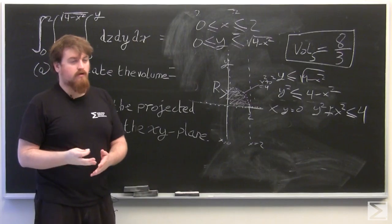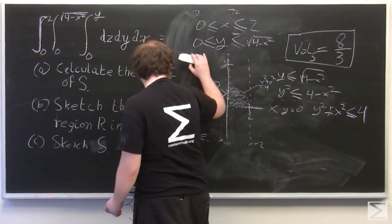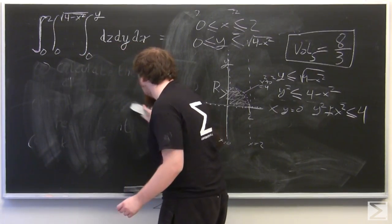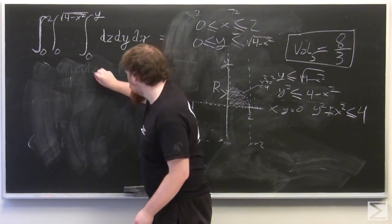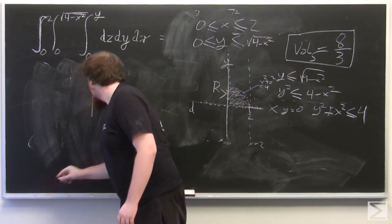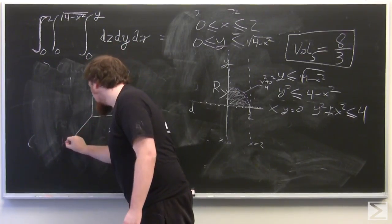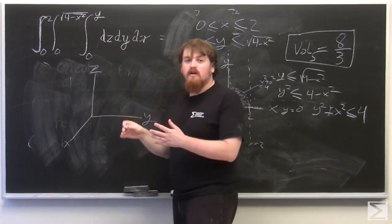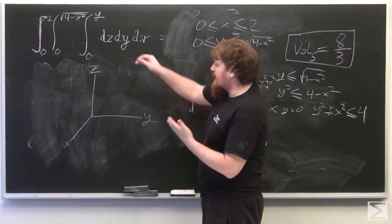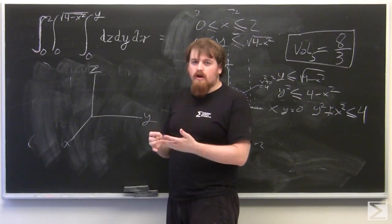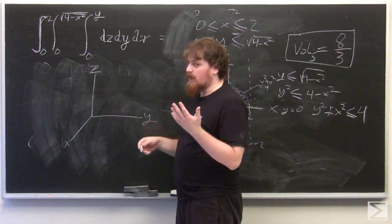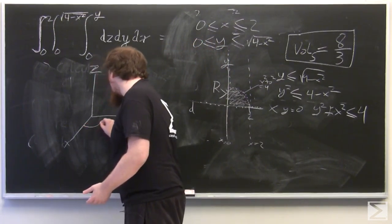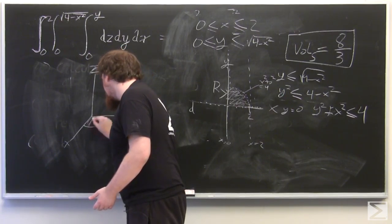So now we need to sketch S. Give myself some room here. And draw the xyz space, breaking my chalk in the process. So here, since we know that R is the projected region of S into the xy plane, we can start by drawing R in the xy plane, and we know that S will have to be above or below R everywhere. So this is our quarter disk in the xy plane.